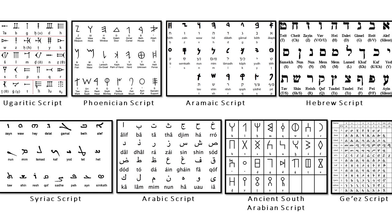The Ge'ez script used for writing the Semitic languages of Ethiopia and Eritrea is technically an abugida, a modified abjad in which vowels are notated using diacritic marks added to the consonants at all times, in contrast with other Semitic languages, which indicate diacritics based on need or for introductory purposes.